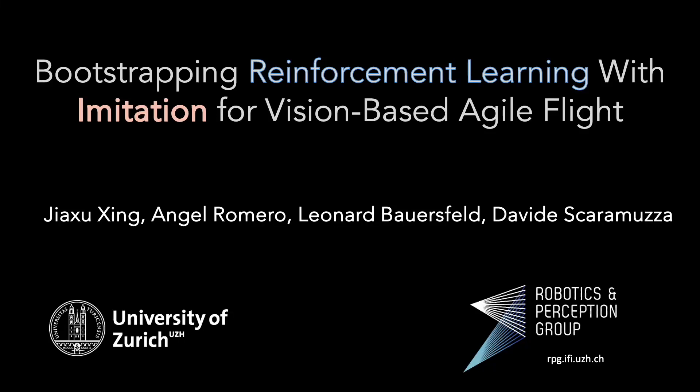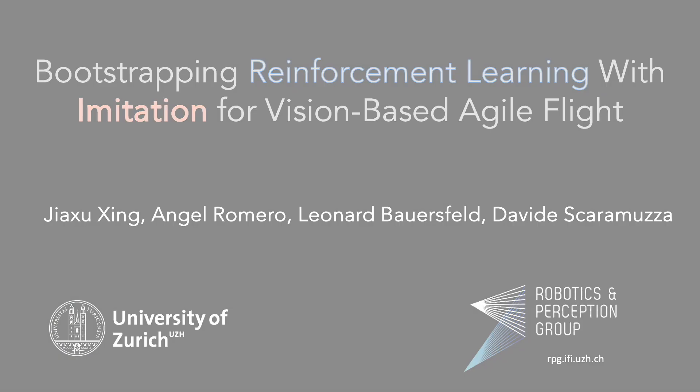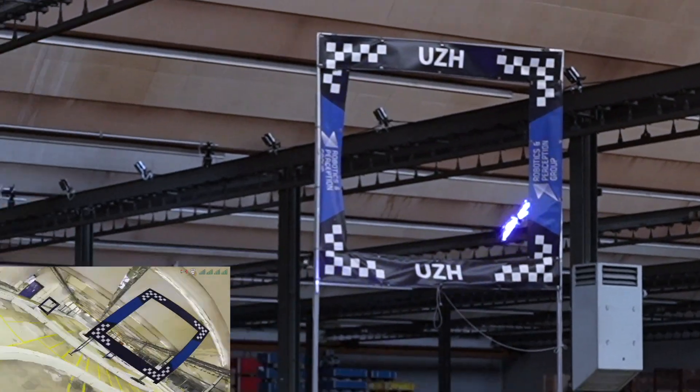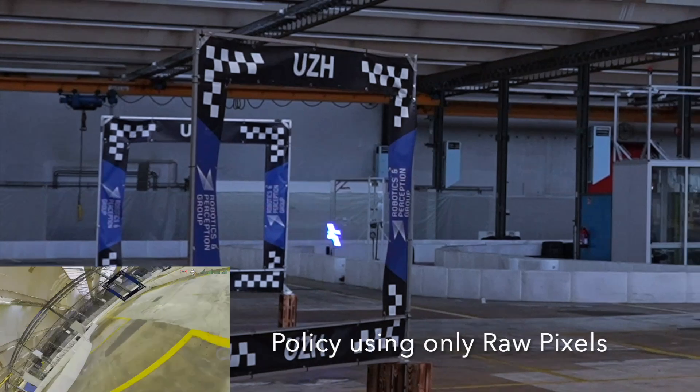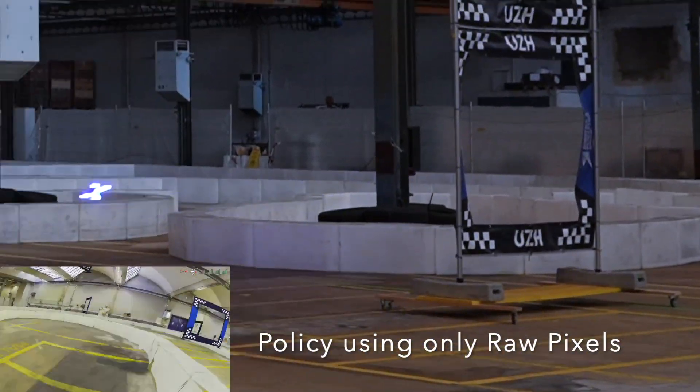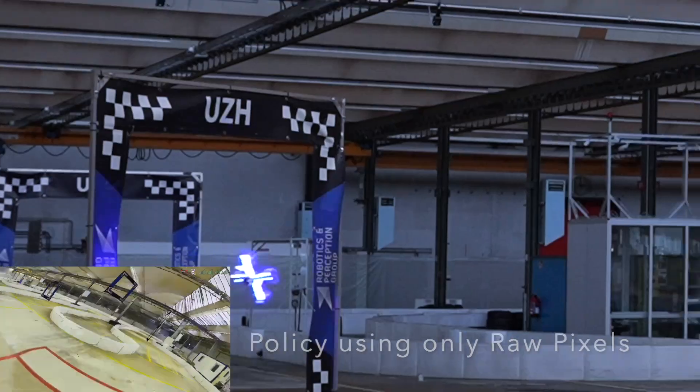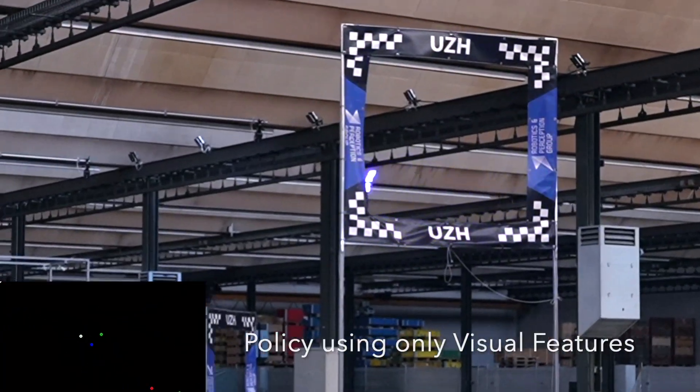We present bootstrapping reinforcement learning with imitation for vision-based agile flight. Our approach can perform end-to-end agile drone racing using only onboard visual information. Our approach learns to fly from raw image pixels or from visual features without state estimation.